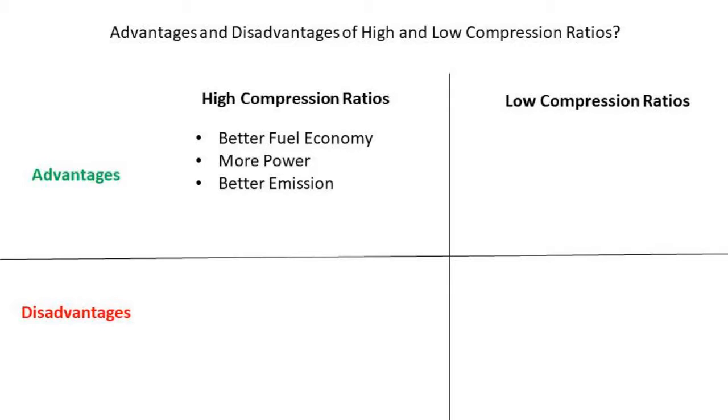High compression ratio advantages are better fuel economy, more power due to being able to extract more energy from the air fuel mixture, and they have a more efficient burn which leads to better emissions.